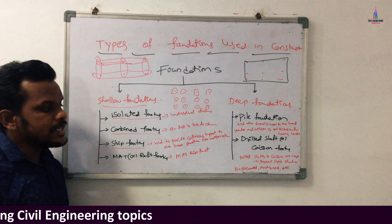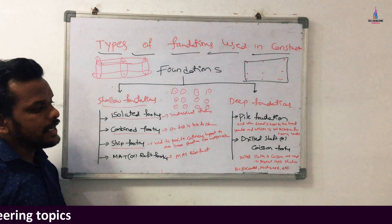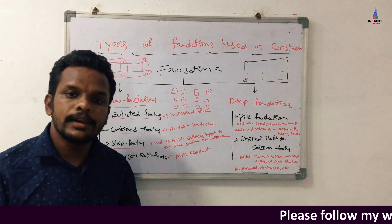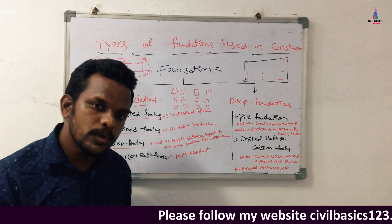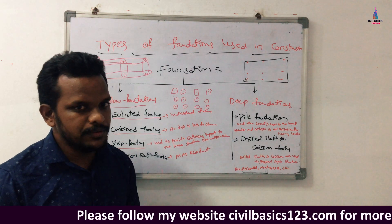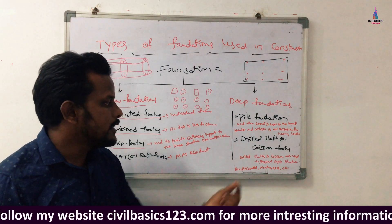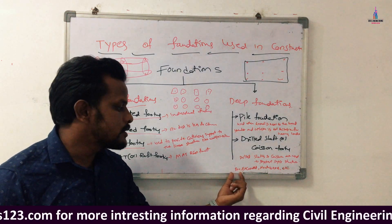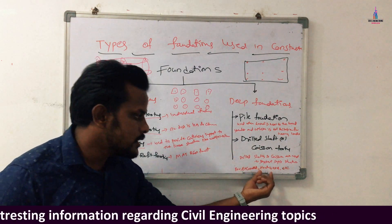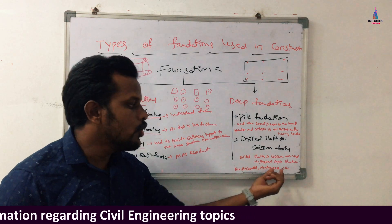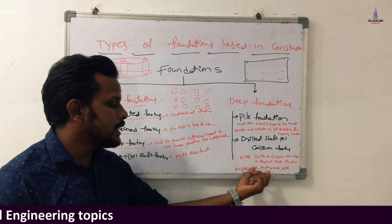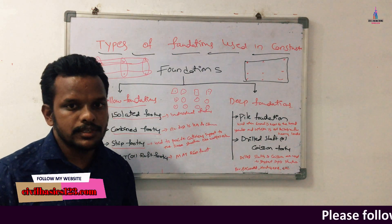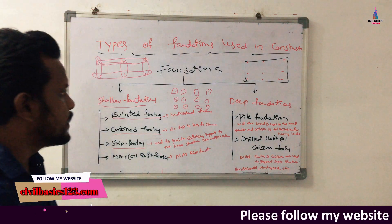The second type under deep foundations is the drilled shaft or caisson foundation. In this case, a drilled shaft or caisson is used for foundation construction in deeper sections below the ground. Drilled shaft or caisson foundations have several sub-types including box caissons, excavated caissons, floating caissons, and open caissons. This completes the deep foundation category.